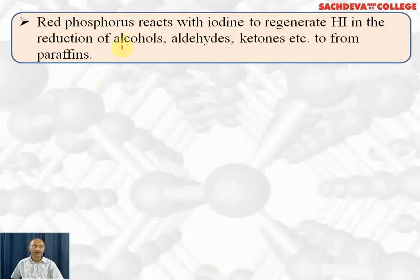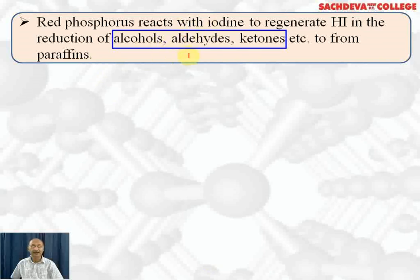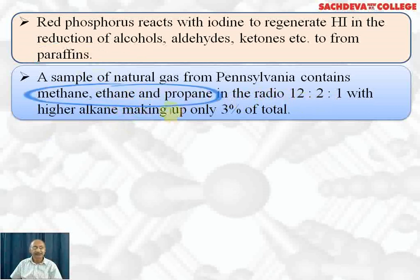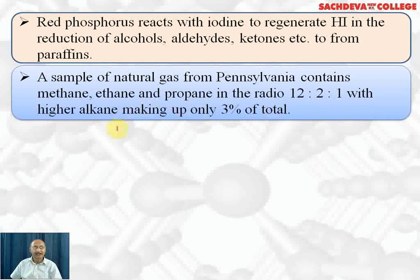Red phosphorus reacts with iodine to regenerate HI in the reduction of alcohols, aldehydes, and ketones to form alkanes. Alkanes are also called paraffins. A sample of natural gas from Pennsylvania contains methane, ethane, and propane in the ratio of 12:2:1, with higher alkanes making up to 3% of the total.